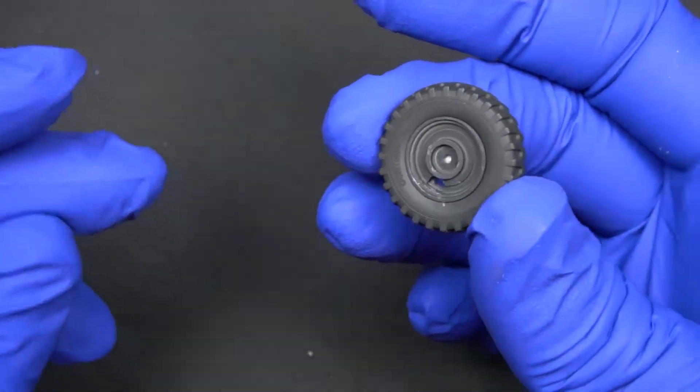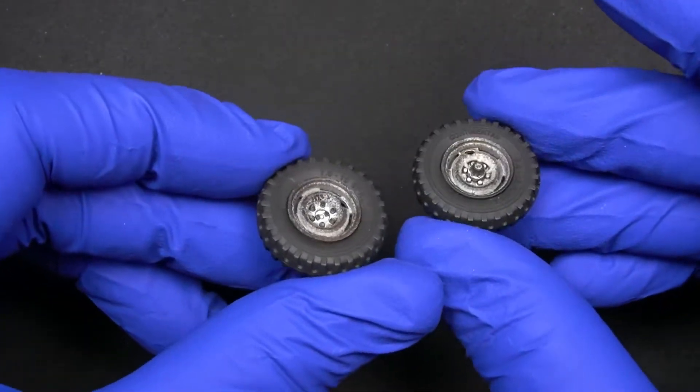Once the wheel is dry, we'll add the rim. We use the same weathering techniques on the rims, using the brush and the sponge.